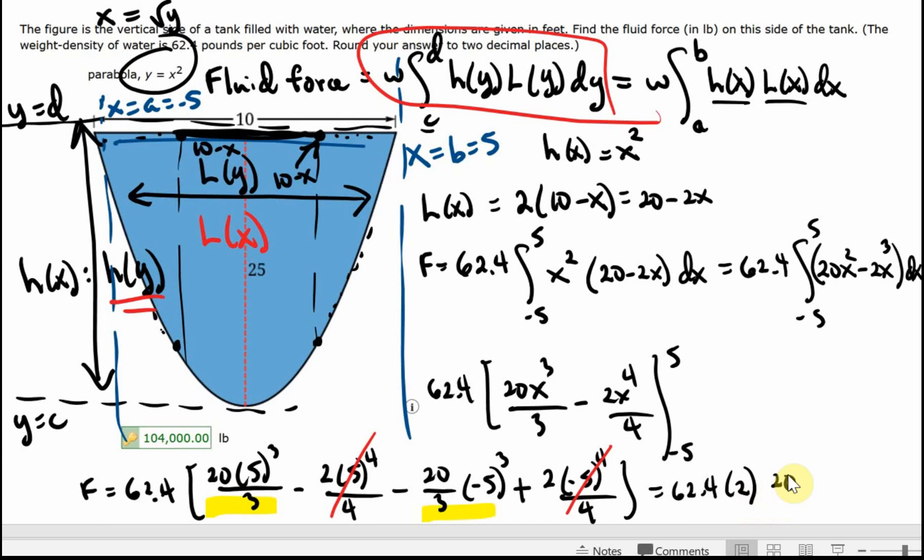Let's check that out with the calculator. It's 62.4 times 2 times 20 divided by 3 times 5 to the third. And that gives us what we want. Now notice here that the weight density is 62.4 pounds per cubic foot.